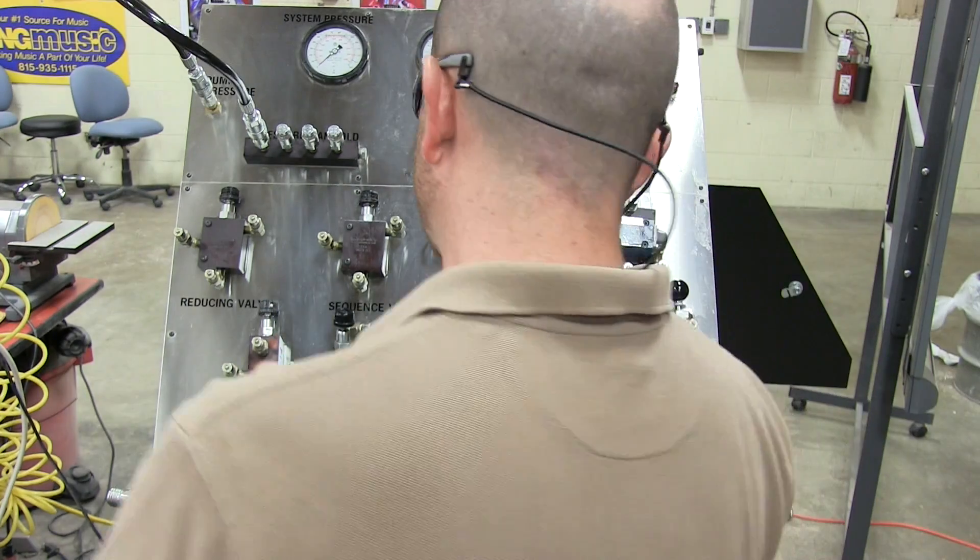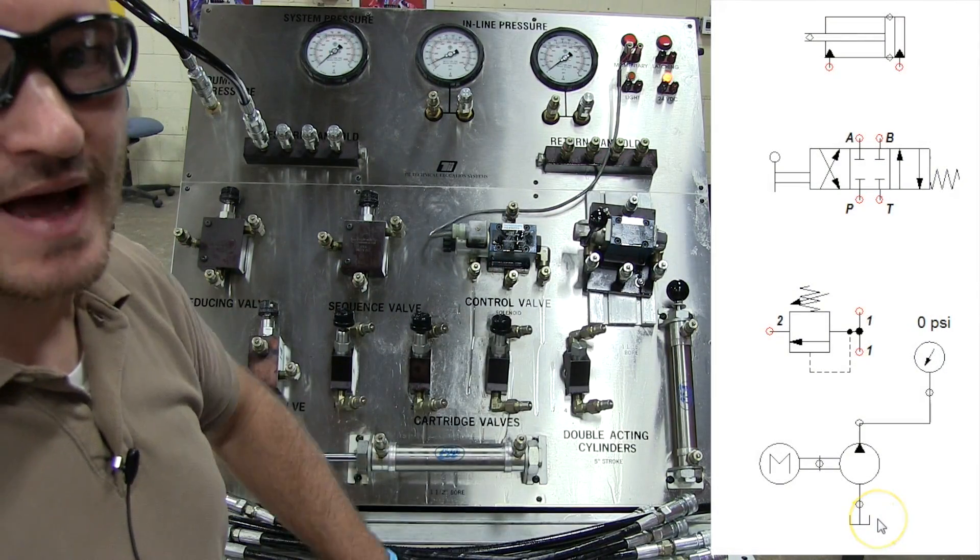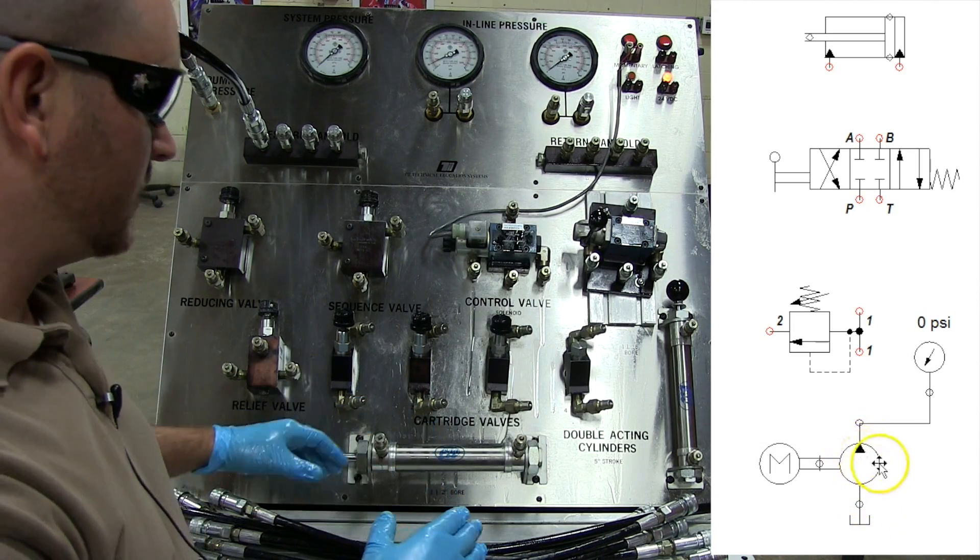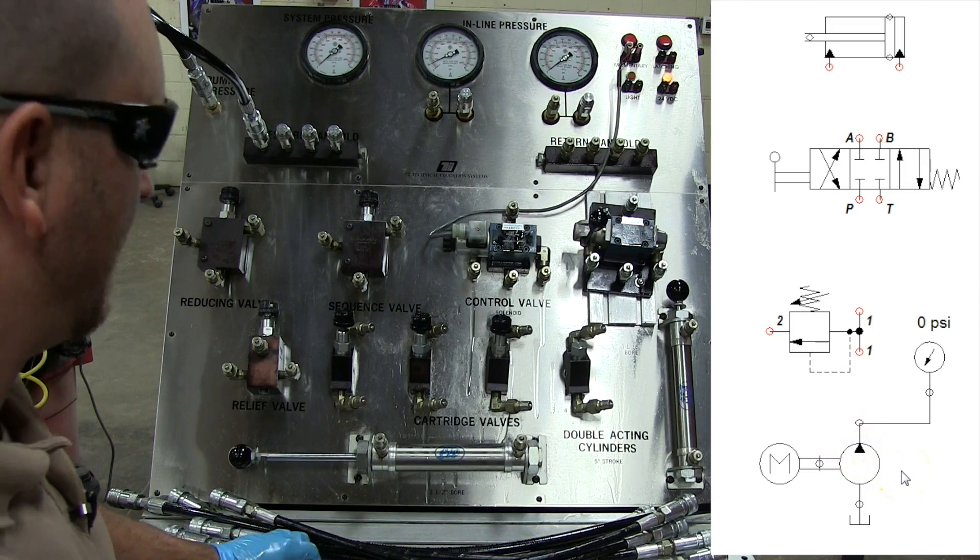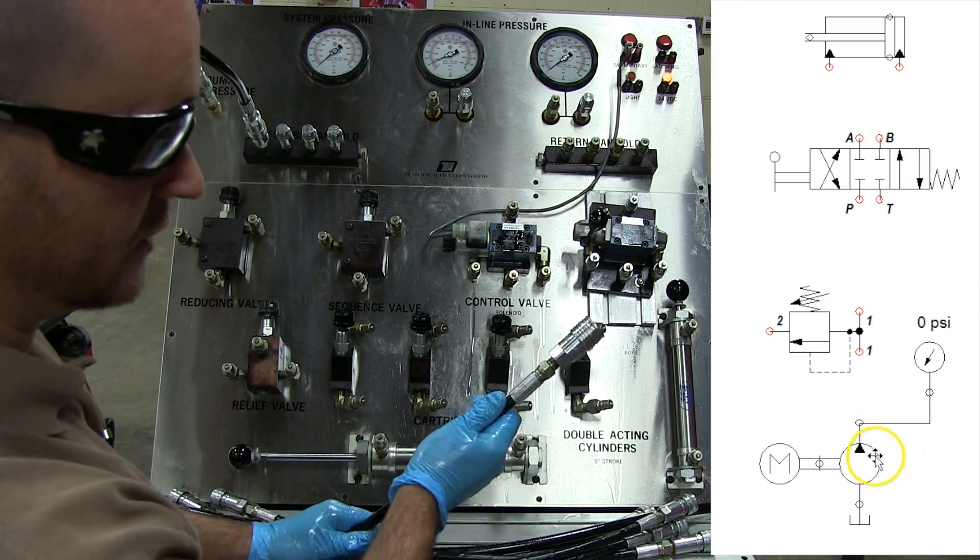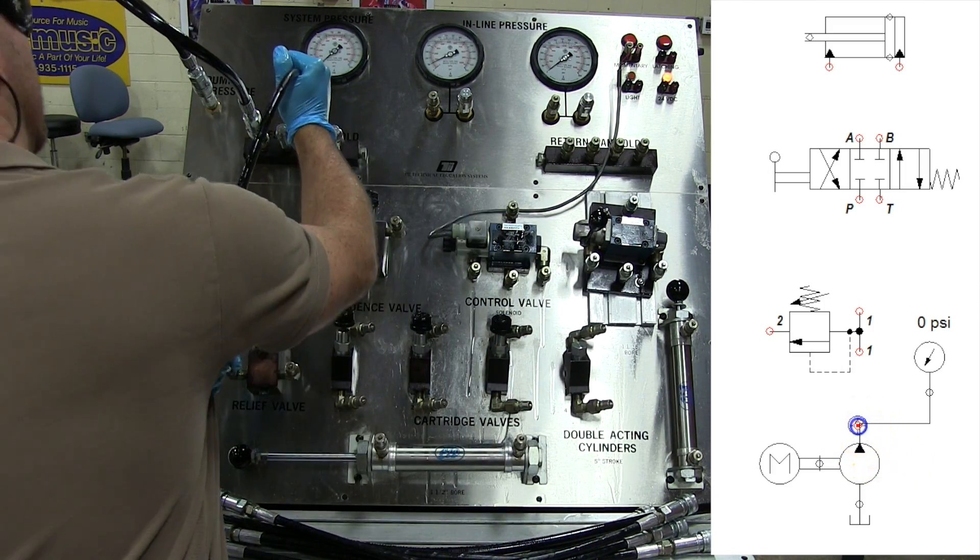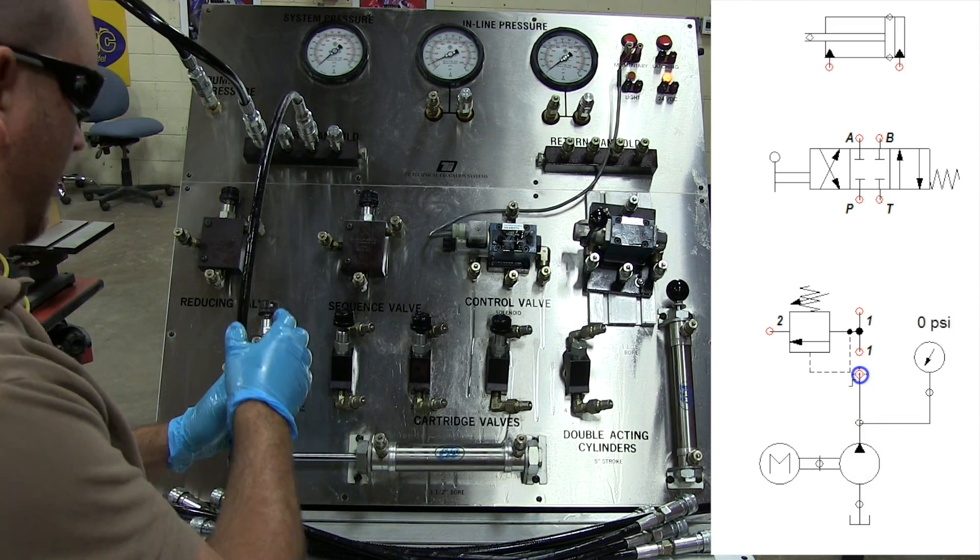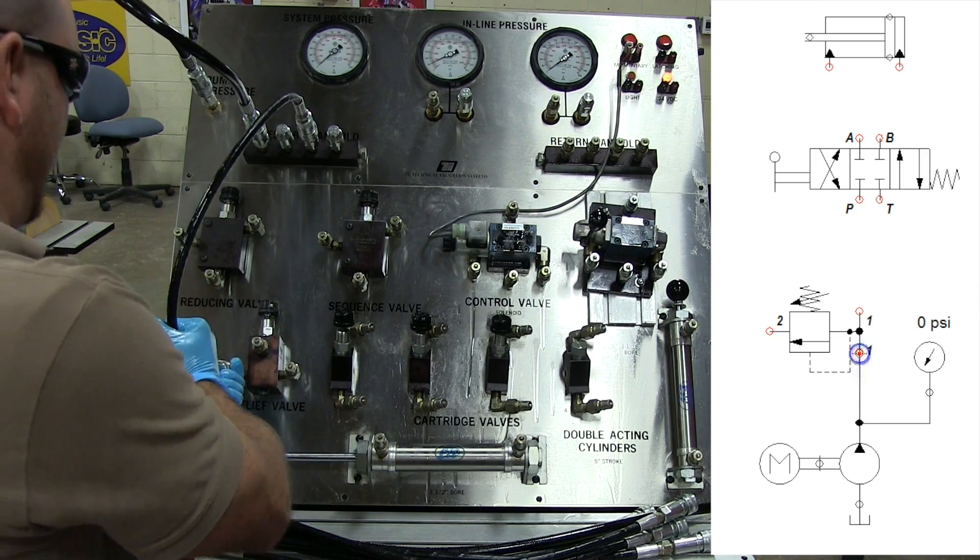So what we're going to do is we're going to pretend that there is no relief valve on this system because there actually is a relief valve built into here, but what we're going to do so we can understand it schematically and what's happening is we are going to hook up right from our pump pressure here, and you can see that on the schematic diagram. We're going to go into our relief valve.